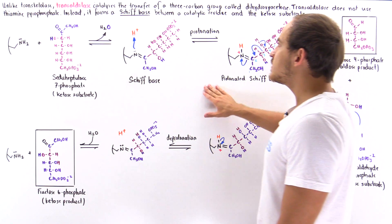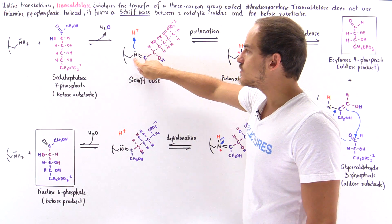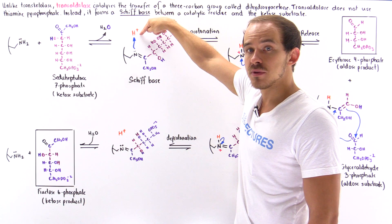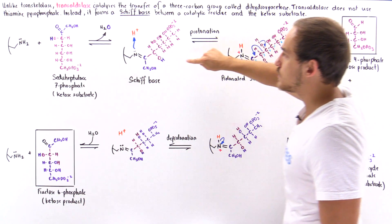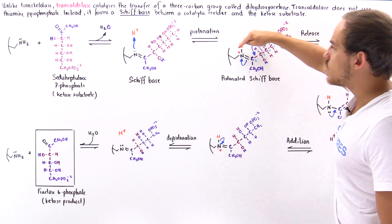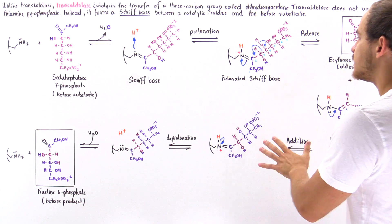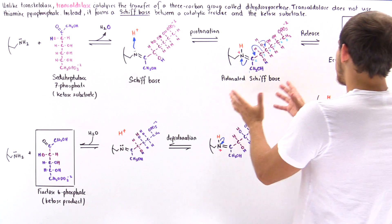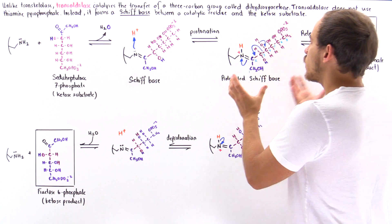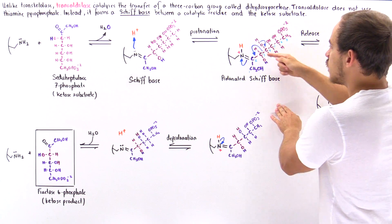In the next step, we have a protonation taking place. This nitrogen, which contains two electrons, grabs an H⁺ ion and forms a sigma bond between the nitrogen and the H ion. In the process, we also generate a full positive charge on this nitrogen. What happens in the next step is to essentially remove that full positive charge from the nitrogen — we have a rearrangement taking place in which this entire component is kicked off.